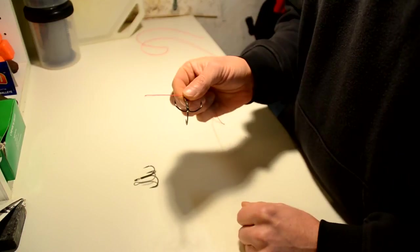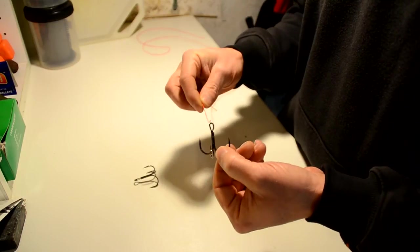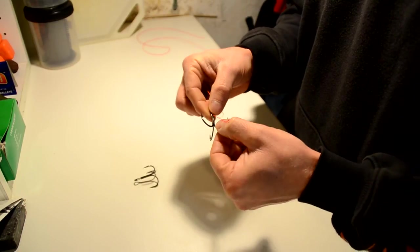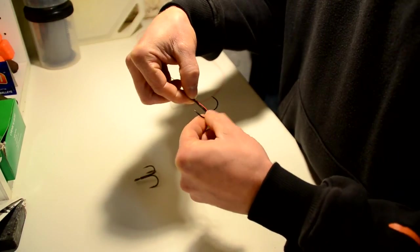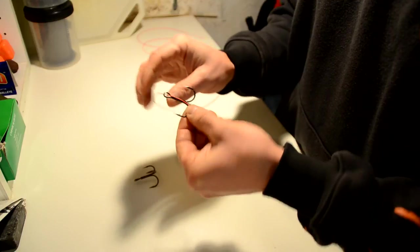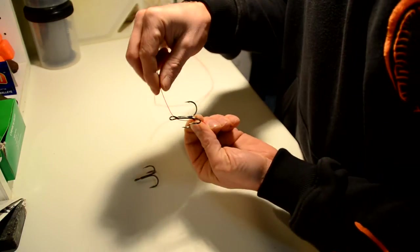Take the hook. Put the tagging through the eye, on the tagging along the shank of the hook, then you turn it one time.